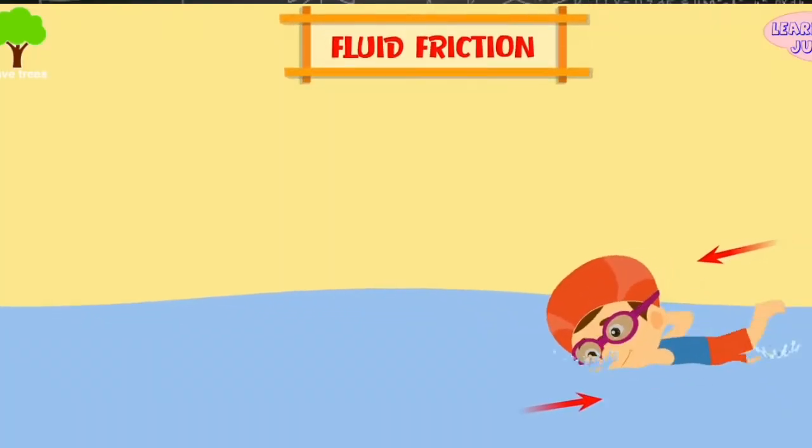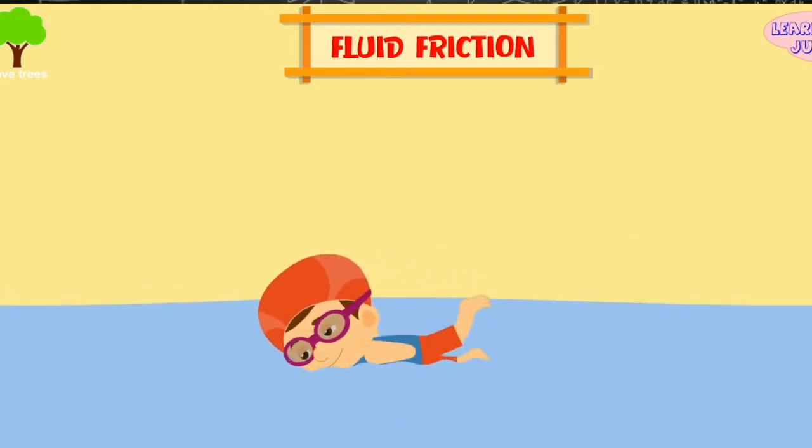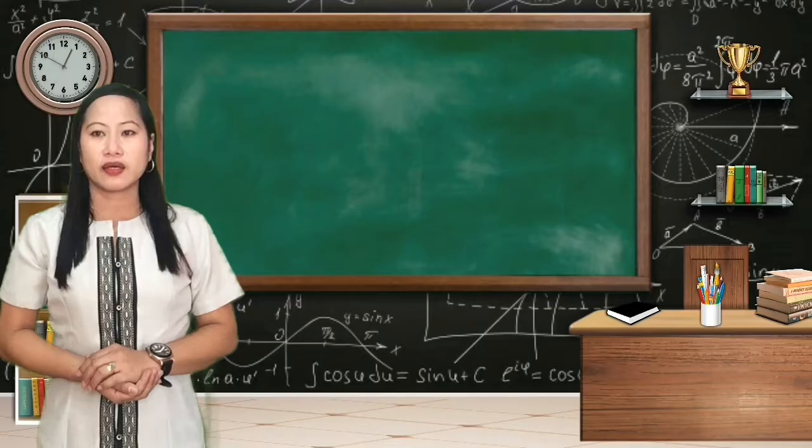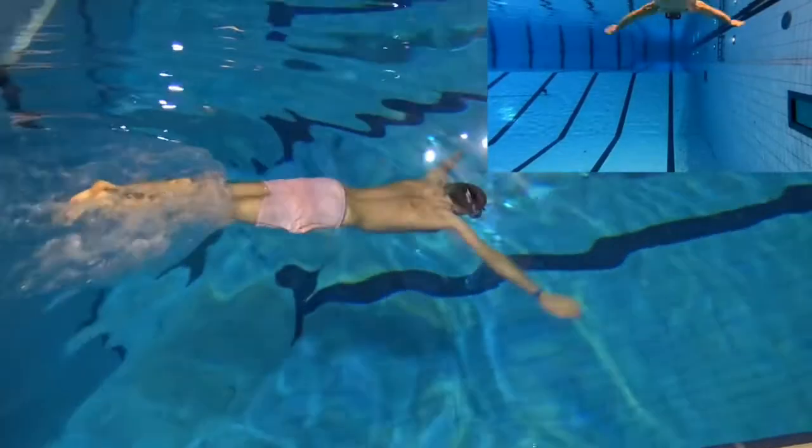Fluid friction occurs when an object moves through a fluid, which can either be a liquid or gas. An example is a dolphin soaring through the air and a man swimming in a pool.